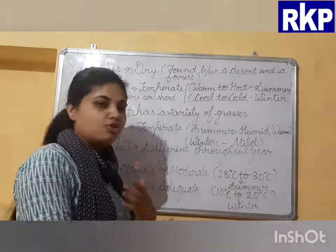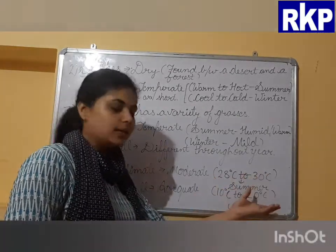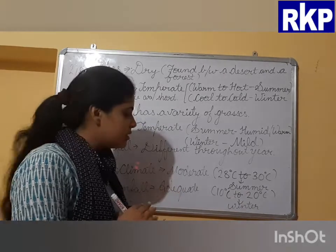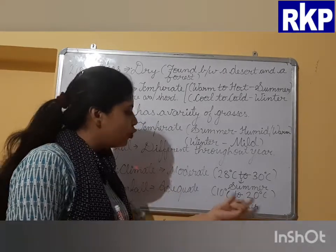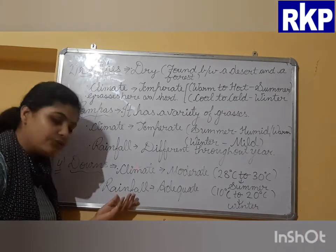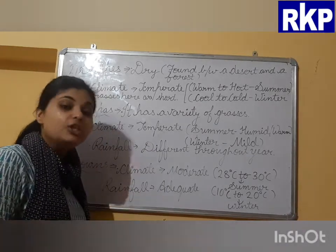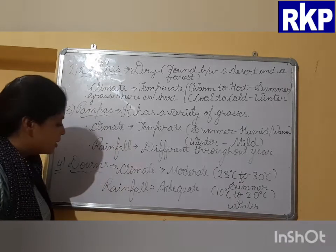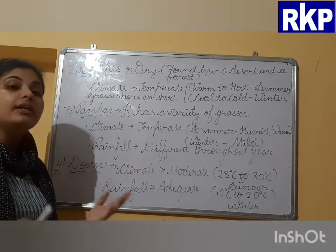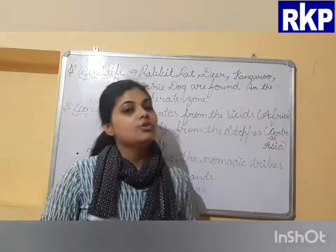Downs are the temperate grasslands found in Australia. The climate is again moderate: summer temperatures range between 28 to 30 degrees Celsius, and winter temperatures range between 10 to 20 degrees Celsius. The rainfall is adequate — sufficient for the growth of grasses.